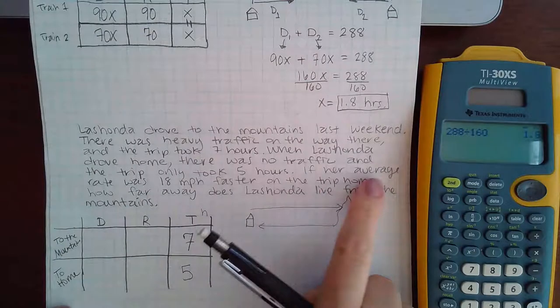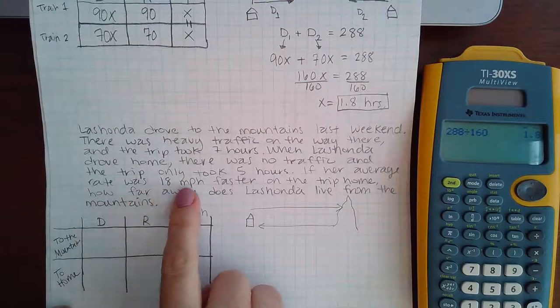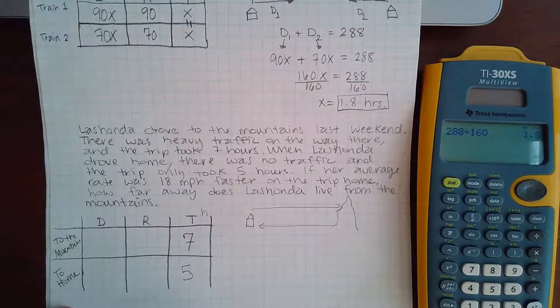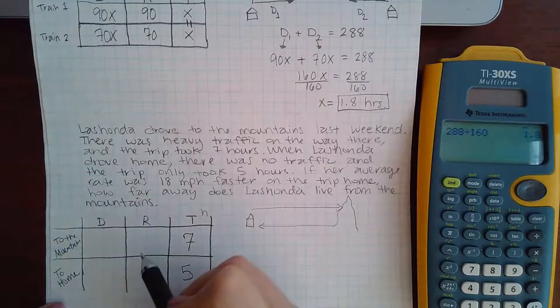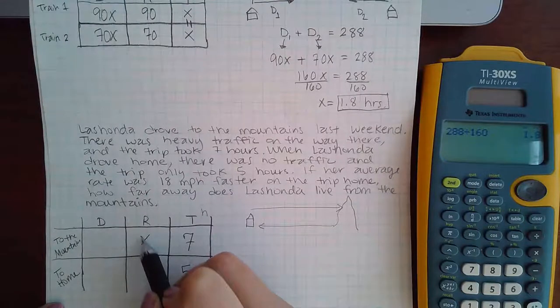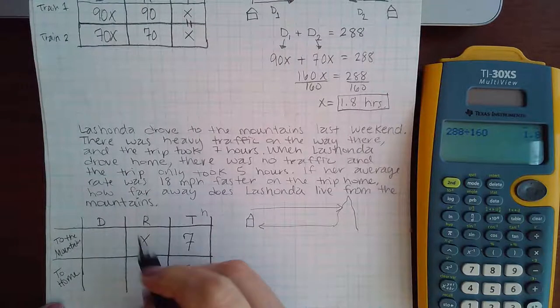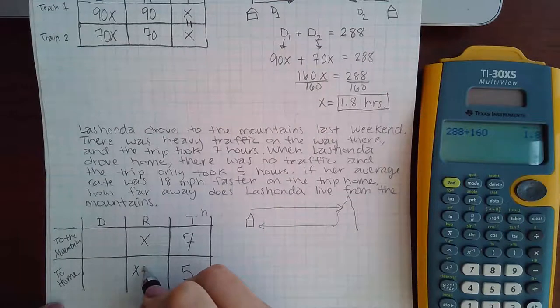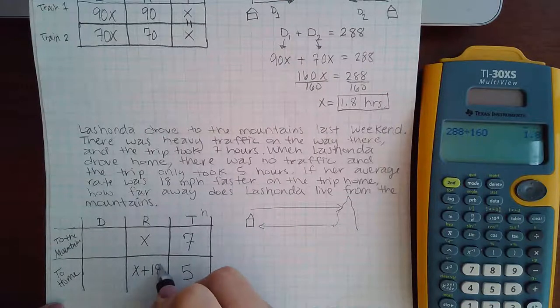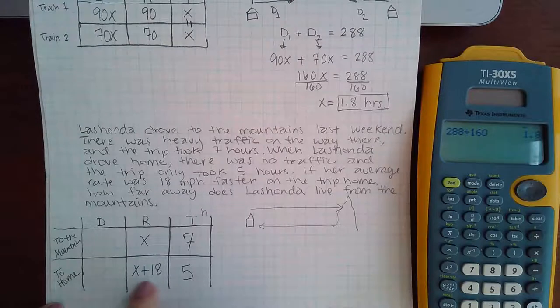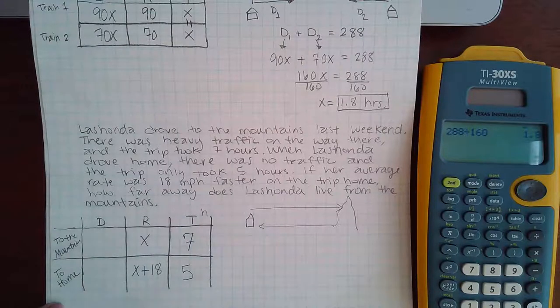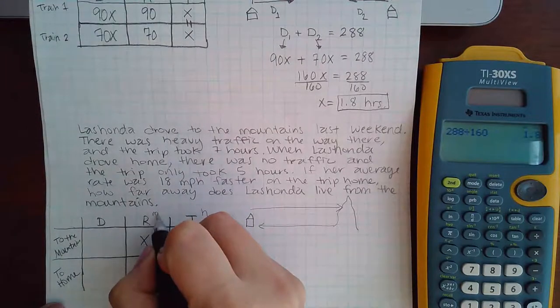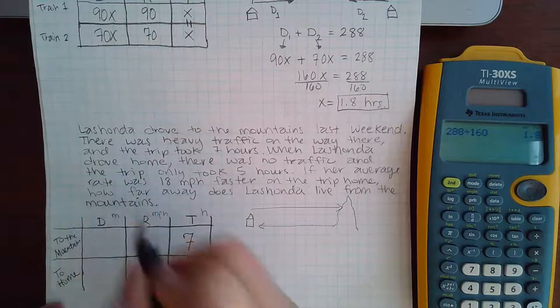And it says that her average rate was 18 miles per hour faster on the trip home. So I don't know how fast she was going on the way to the mountain, but I do know that she should be traveling 18 miles per hour faster, so adding to her speed, on the way home. And this is miles per hour, which means distance has to be miles.